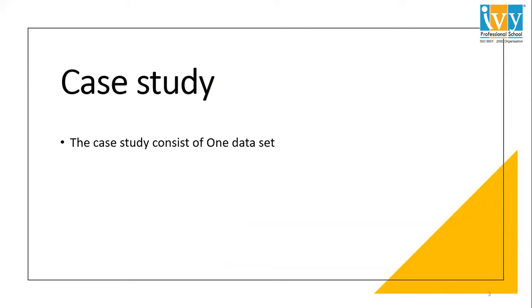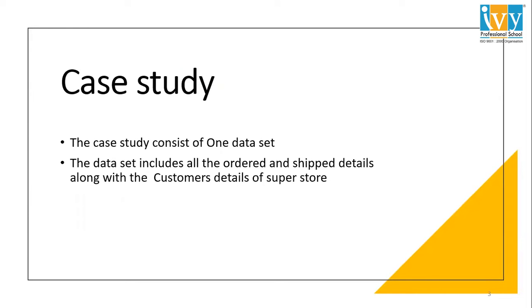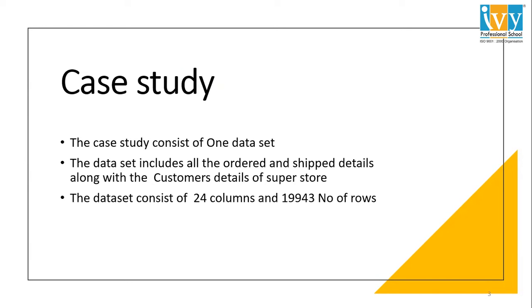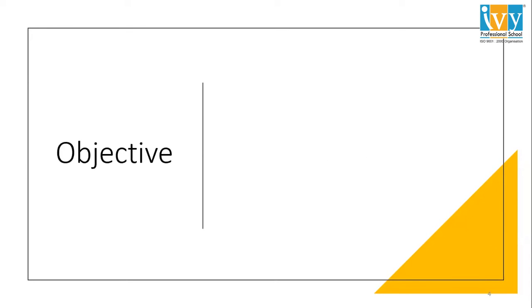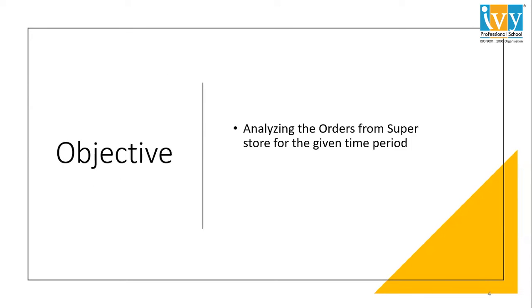This case study consists of one dataset. The dataset includes all the orders and shipping details along with the customer details of the superstore. It consists of 24 columns and 19,943 rows. The objective is to analyze the orders from the superstore for the given period of time and publish the findings based on data analysis.